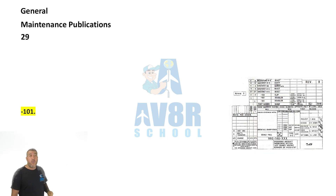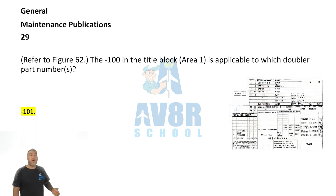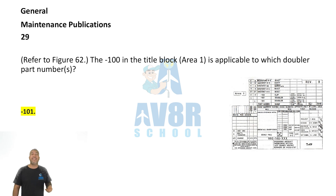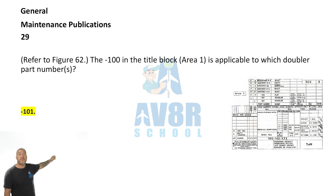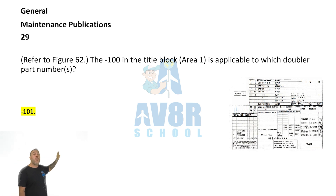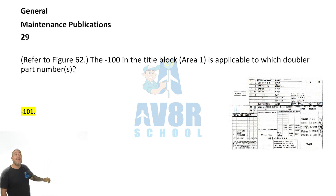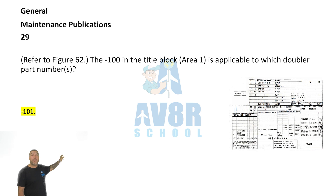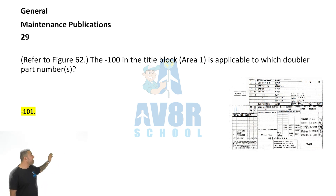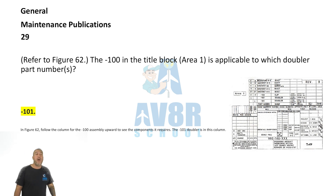Number 29: The dash-100 in the title block is applicable to which doubler? Looking at the part numbers, you'll notice it is the dash-101. The dash-100 in the title block area one is applicable to the doubler with part number dash-101.